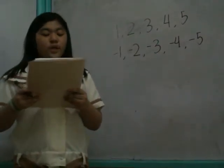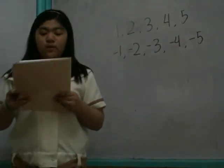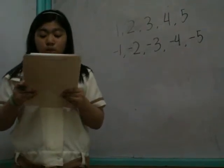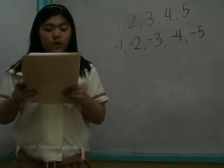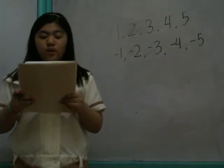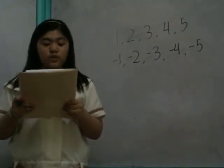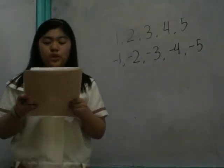A positive number can be written with a positive sign, but it does not need to have a sign. A negative number must be written with a negative sign. Another way of showing the set of integers is to locate them as points on a number line.